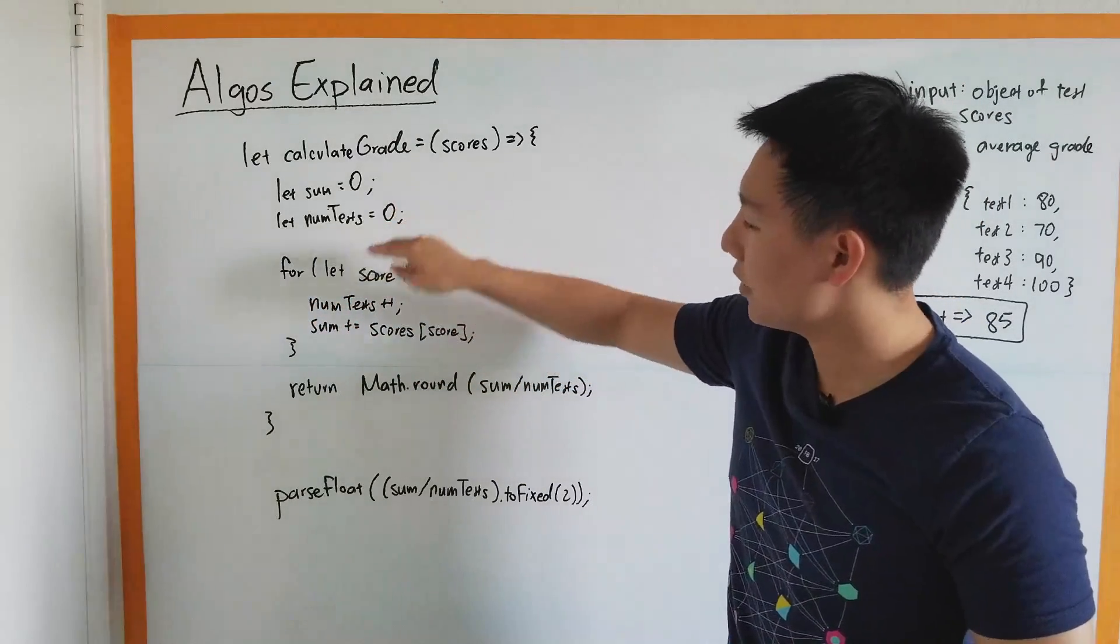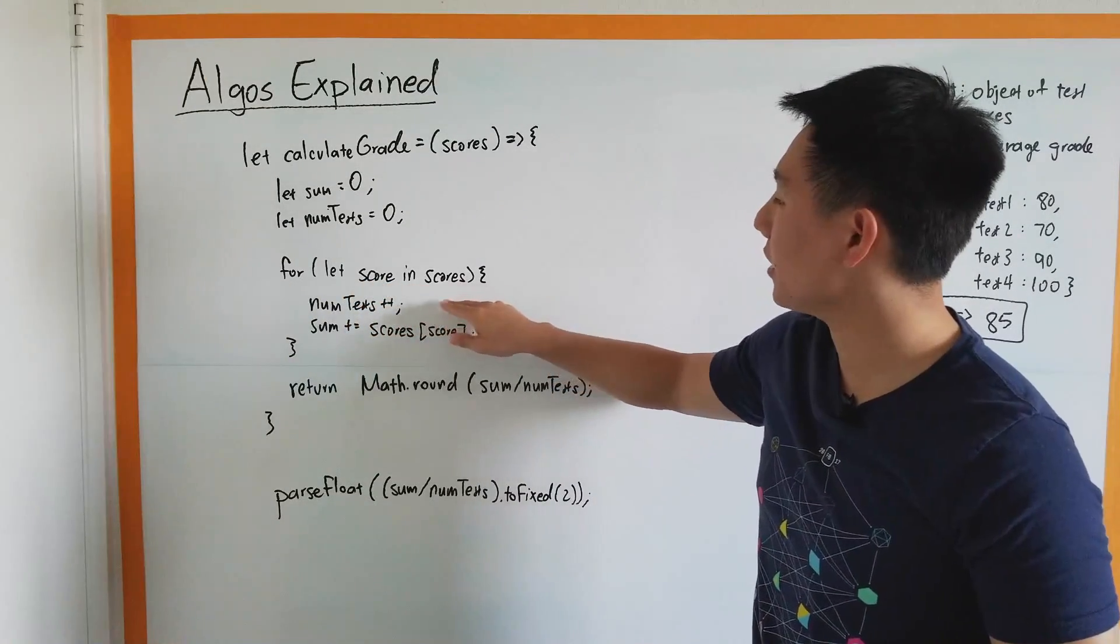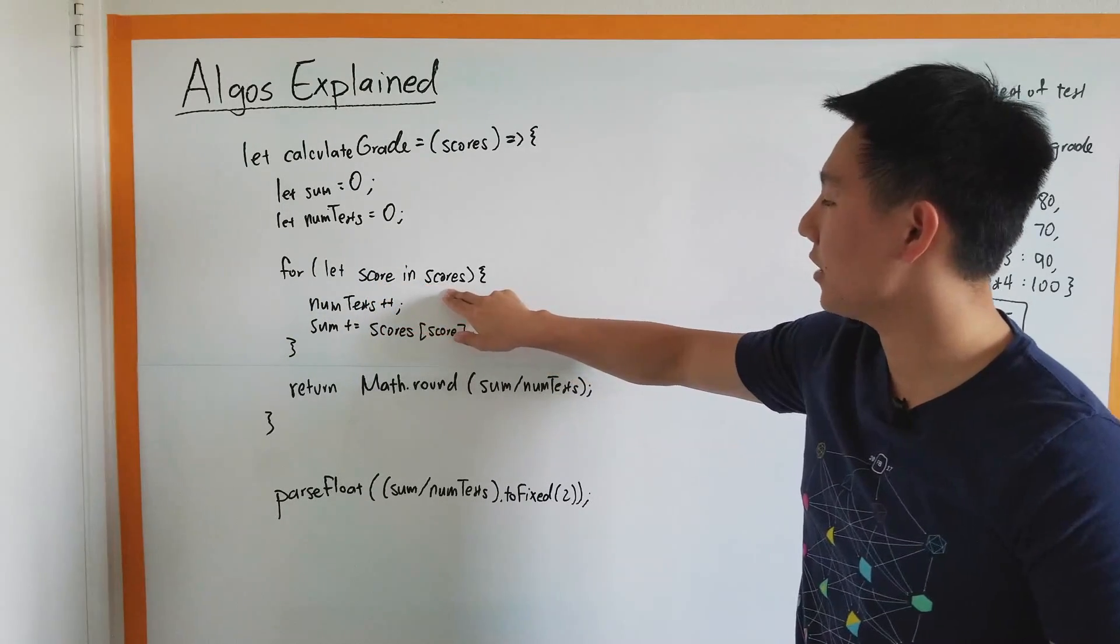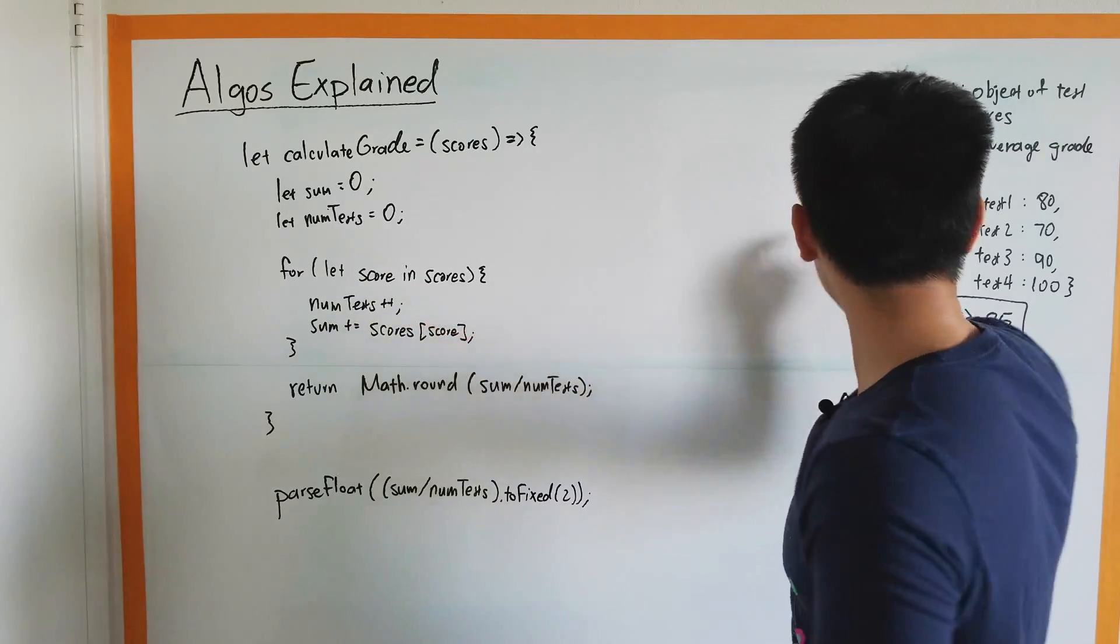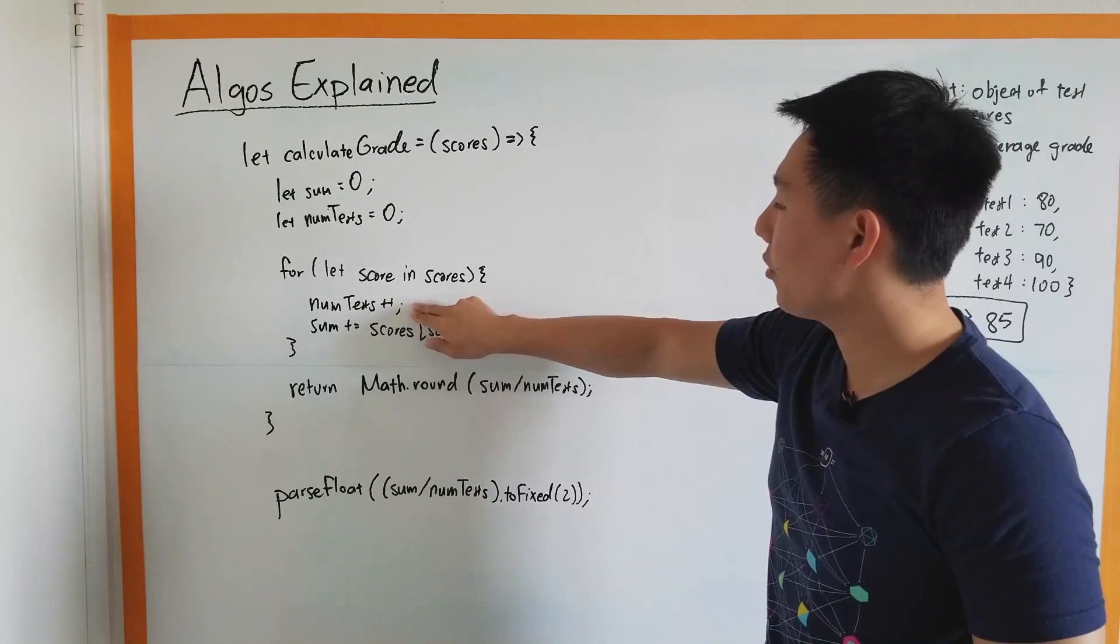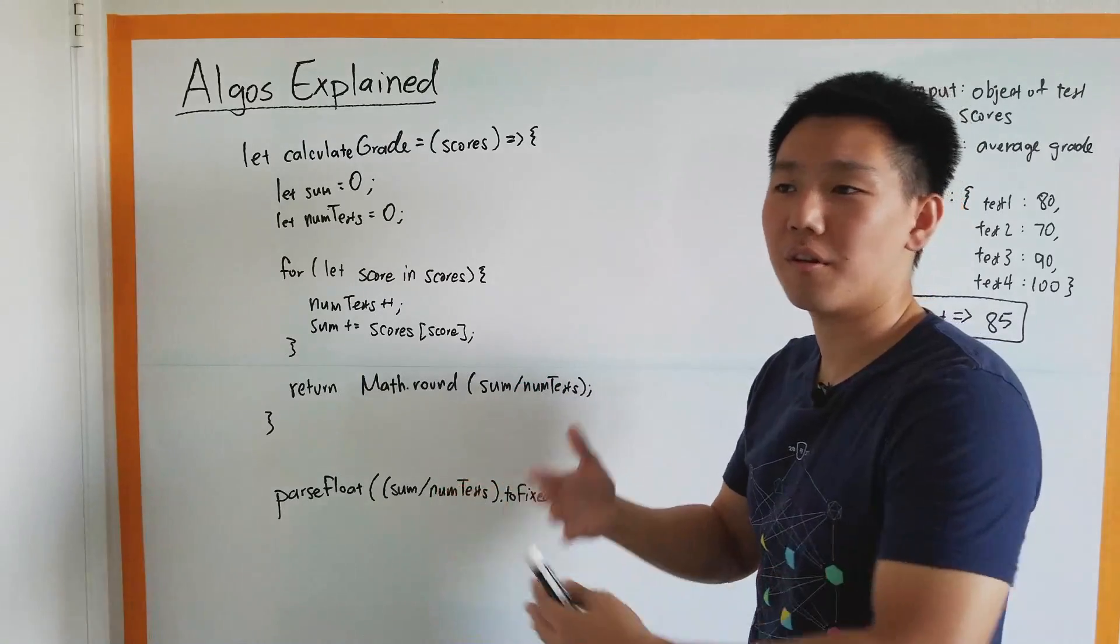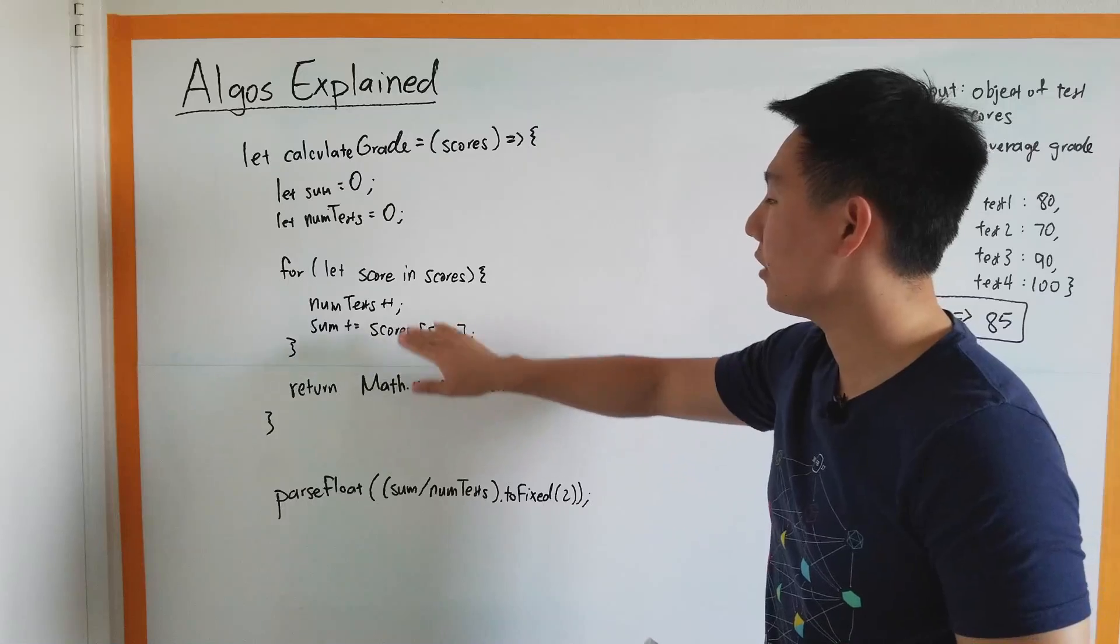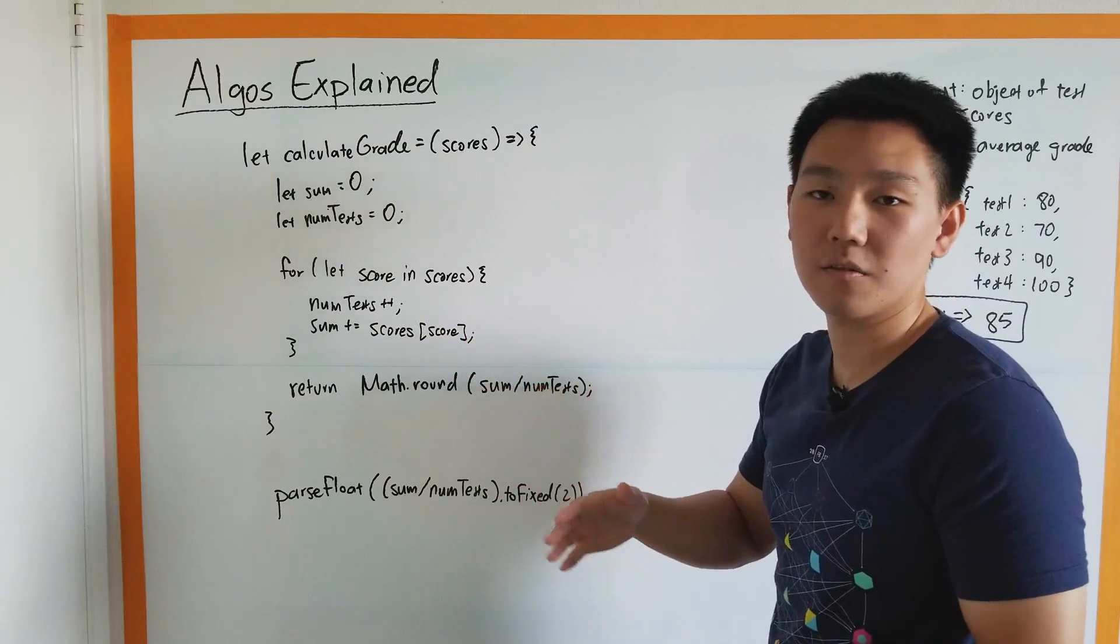We do that exactly like this. This is the format to go through an object: for let key in object, or var key in object. Pretty much this is the key, and we're going to call our key score, and the object's name is scores. Once we hit any number of tests on here, we're going to immediately increment numTest because we know we are at a test. We increment the test by one, and every test just counts for one test.